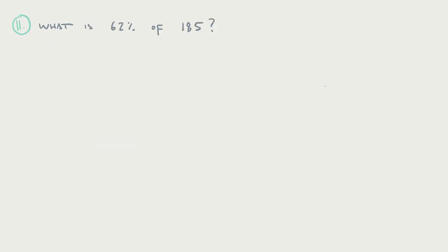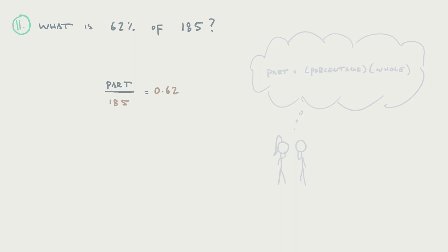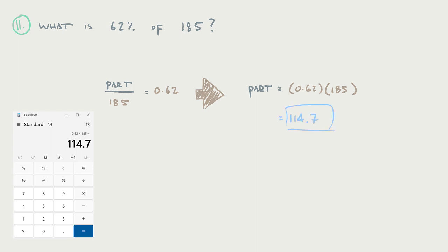Example number two: what is 62% of 185? Starting with the part and whole model, we're given the percentage — 62% goes there. The word 'of' is there as an indicator of the whole, so 185 is our whole and we need to figure out the part. We've already solved the part-whole model for the part: part equals percentage times whole. So we get 0.62 times 185. Multiplying these two things together gives us 114.7. So 114.7 is 62% of 185.